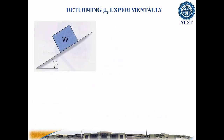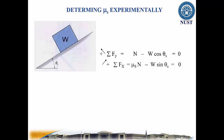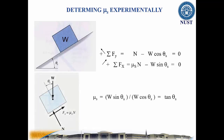A block with weight W is placed on an inclined plane. The plane is slowly tilted until the block just begins to slip. The inclination theta_S is noted. Analysis of the block just before it begins to move gives this relation. Using these two equations, we get the static coefficient of friction equal to tangent of theta_S. This simple experiment allows us to find the static coefficient of friction between two materials in contact.